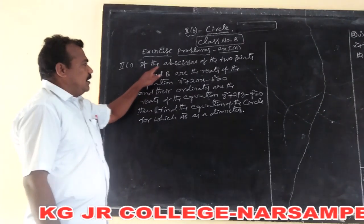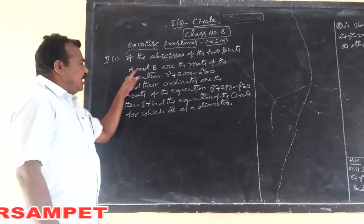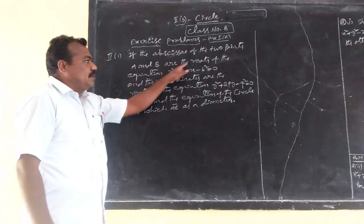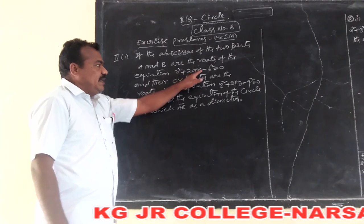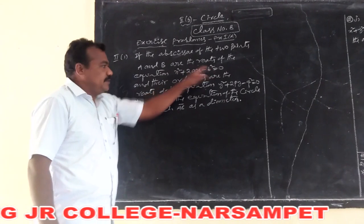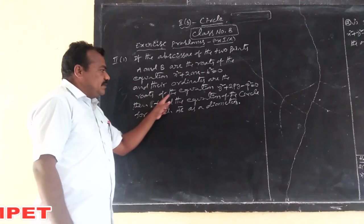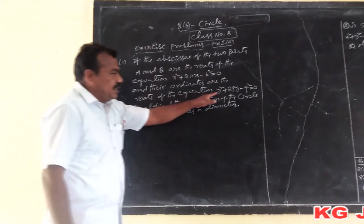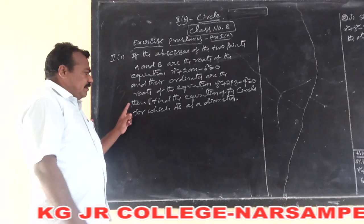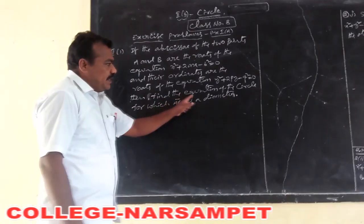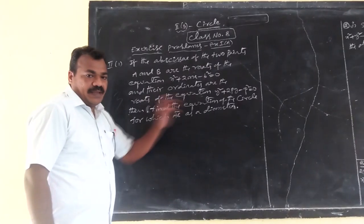If the abscissas of two points A and B are the roots of the equation x² + 2ax − b² = 0, and their ordinates are the roots of the equation y² + 2py − q² = 0, then find the equation of the circle for which AB is a diameter.